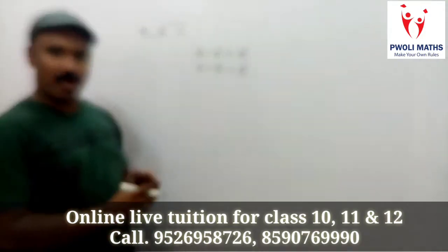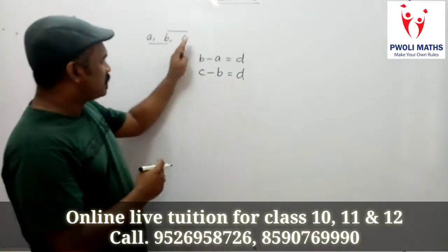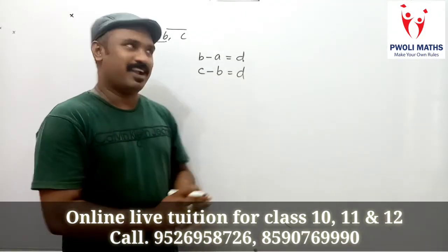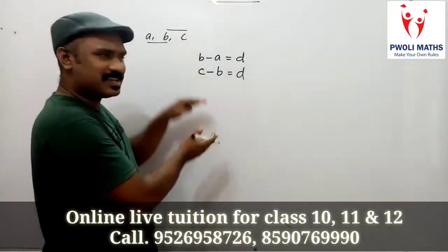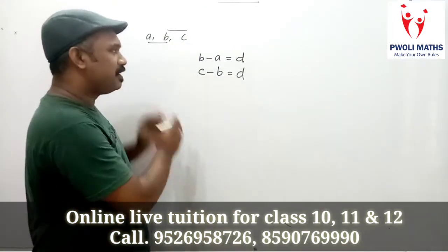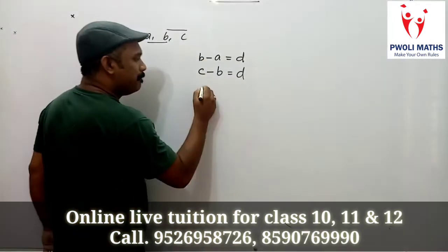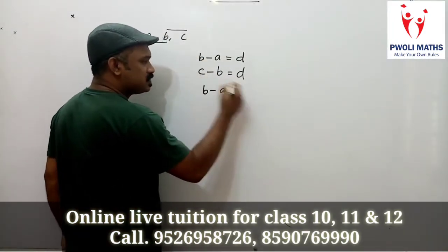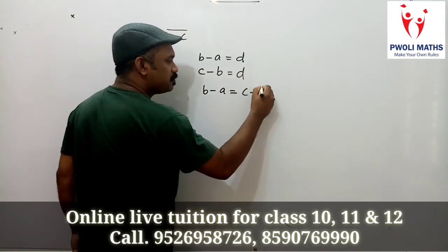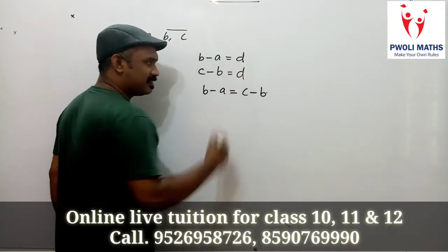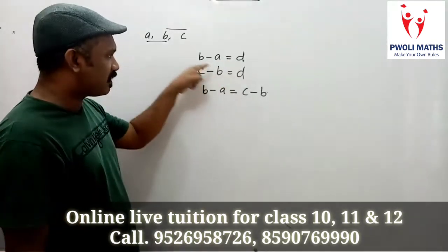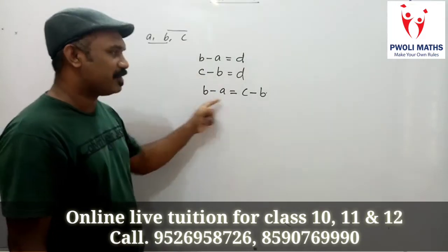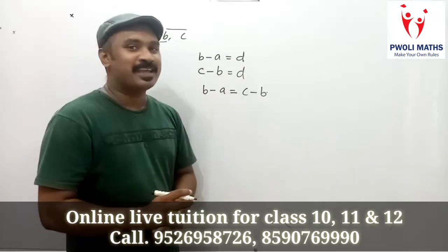B minus A is the common difference, and C minus B is also the common difference. So the meaning of the common difference being equal is that B minus A is equal to C minus B.